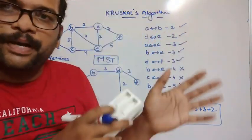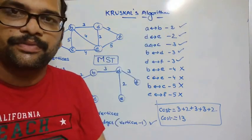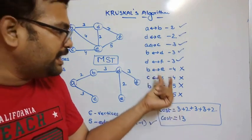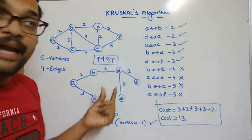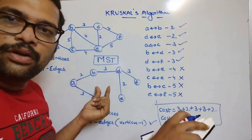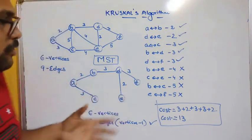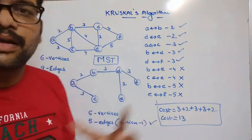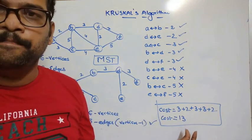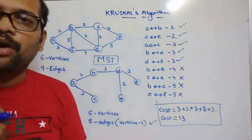This is the procedure for Kruskal's algorithm. First, arrange all the edges in ascending order based on their cost. Then consider each edge and construct a tree. If adding an edge forms a cycle, ignore it and consider the next least cost edge. Repeat until all vertices are covered. Here, all 6 vertices are covered with a cost of 13.